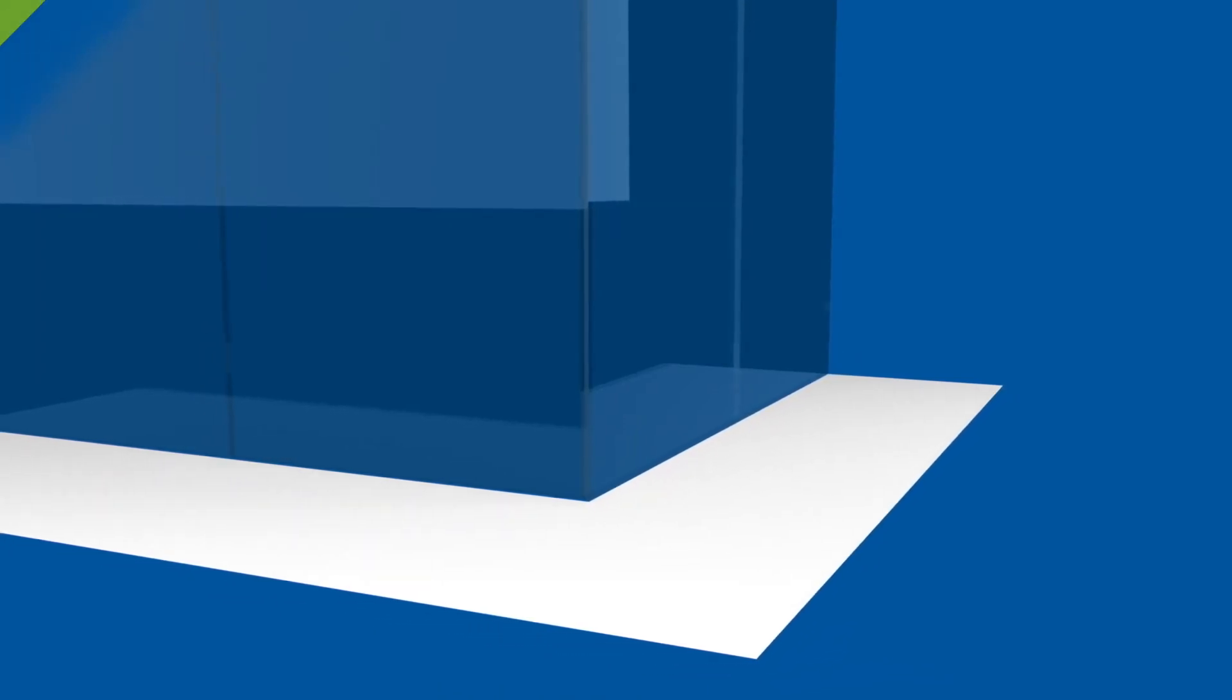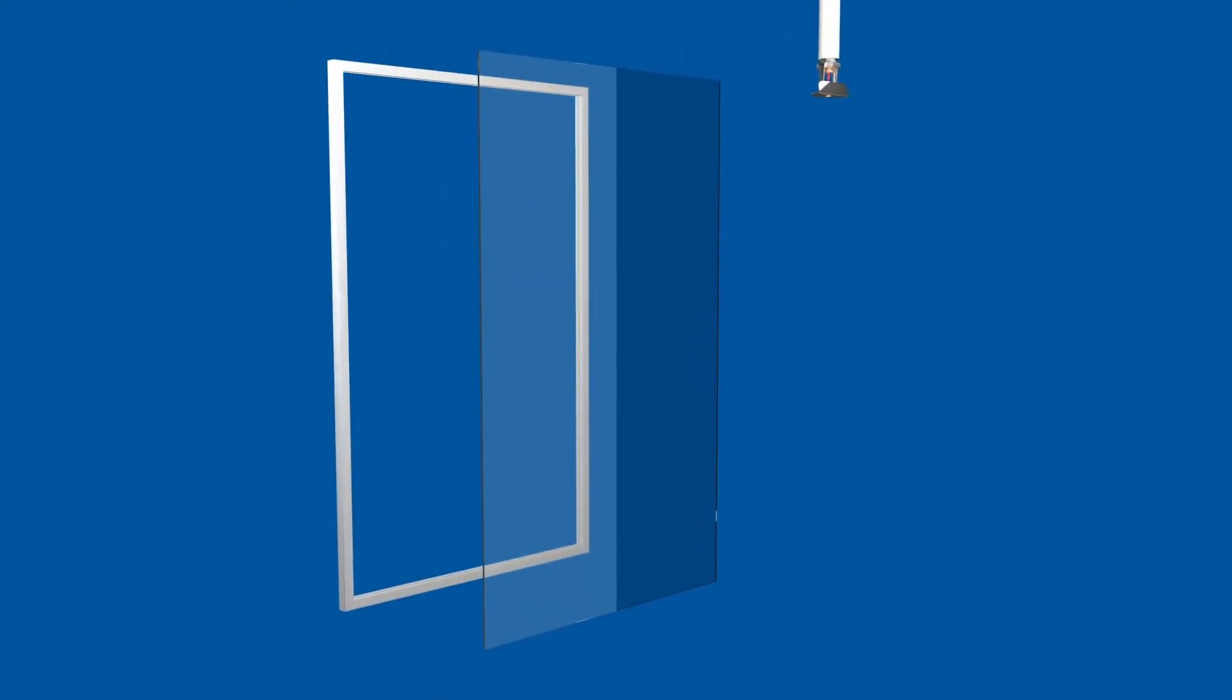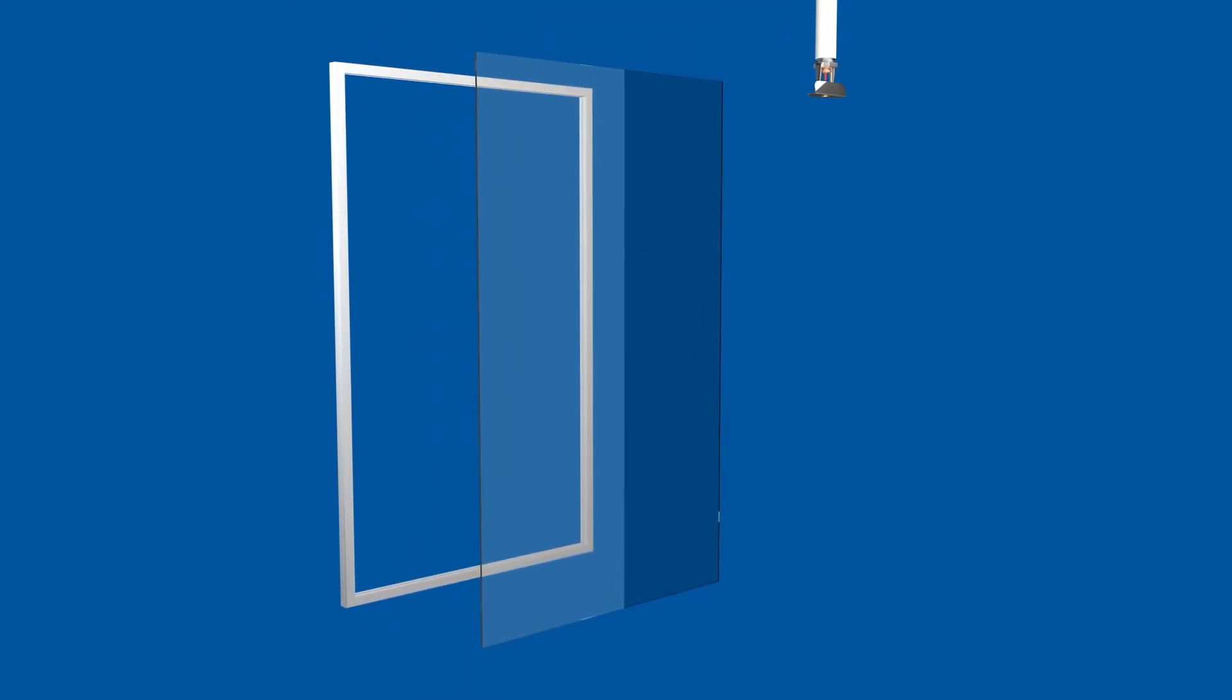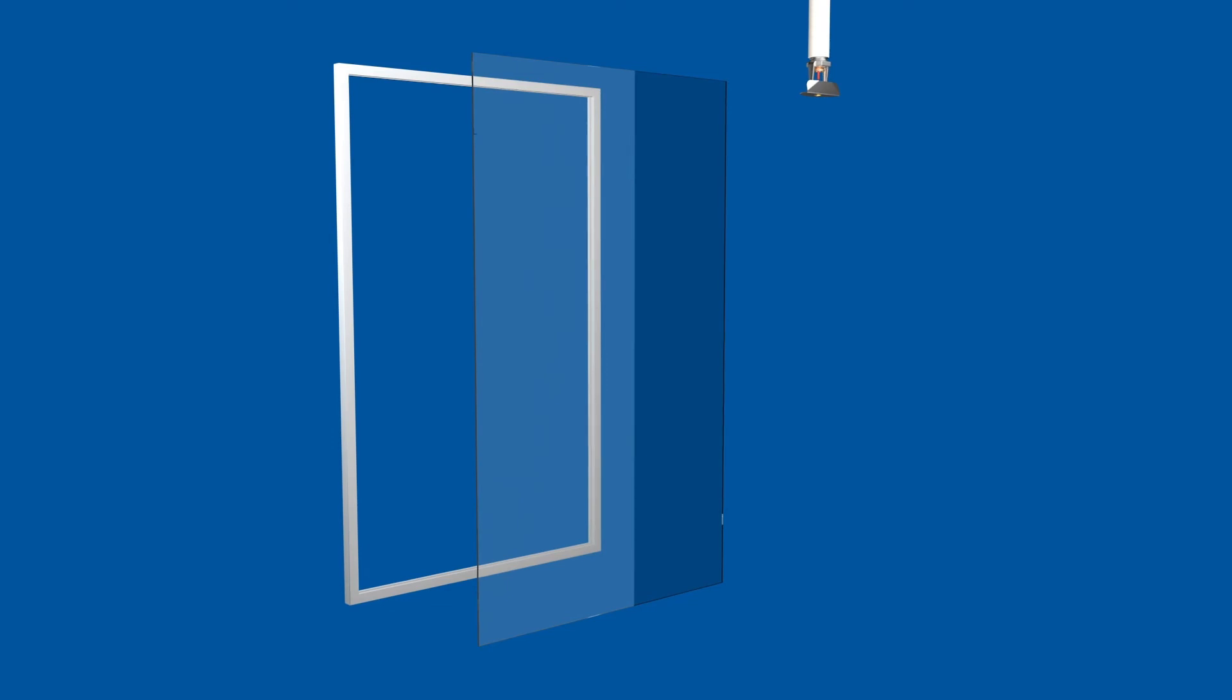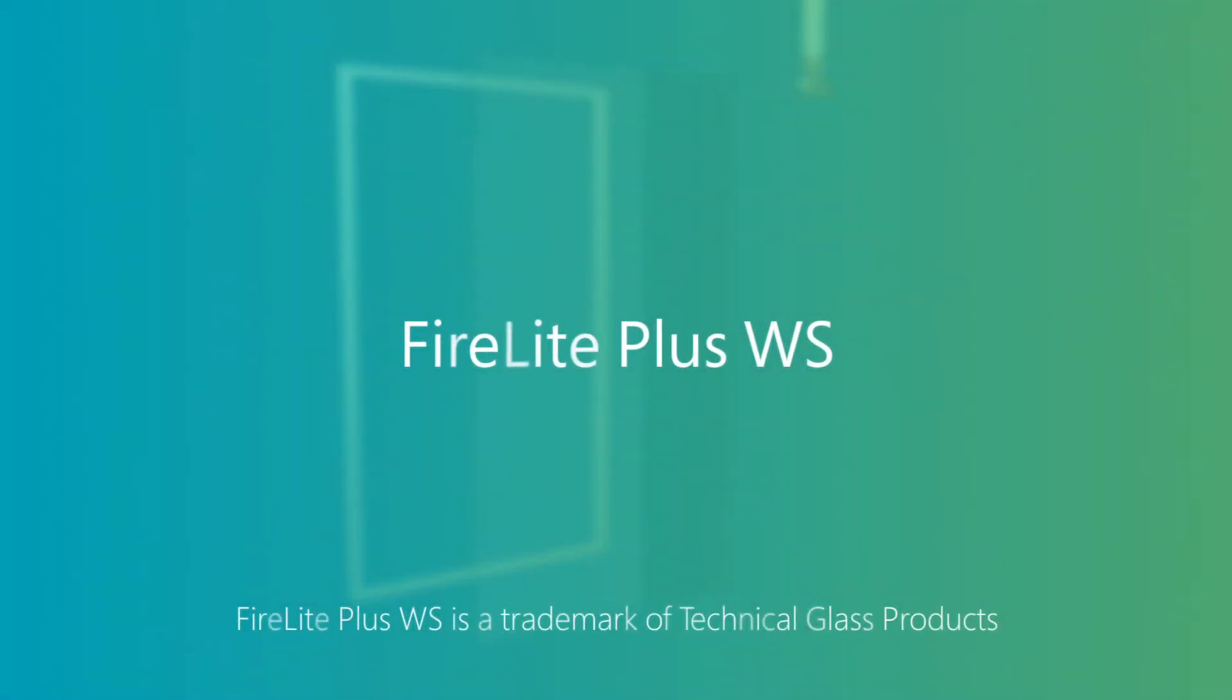For example, when a window sprinkler is used with specific glass products that are alternatives to fire-rated assembly, a pony wall might not be necessary. A pony wall can also be removed if a window sprinkler is used with FireLite Plus WS Glass, a specific type of fire-rated glass.